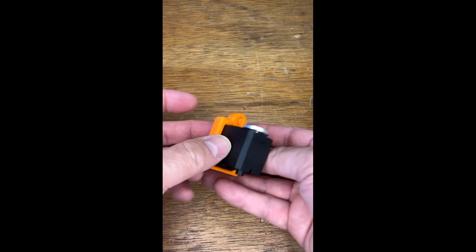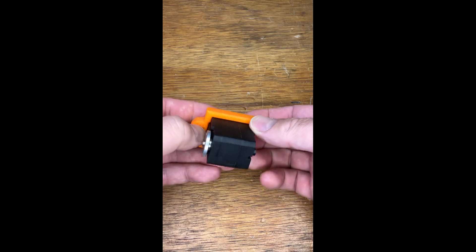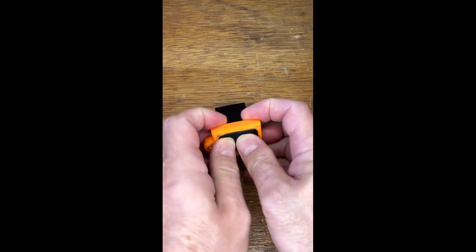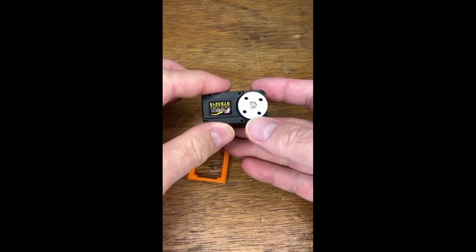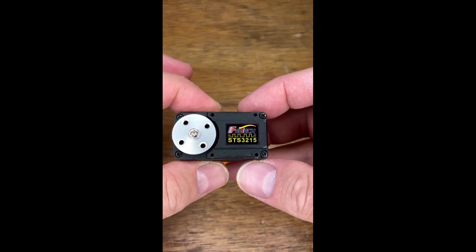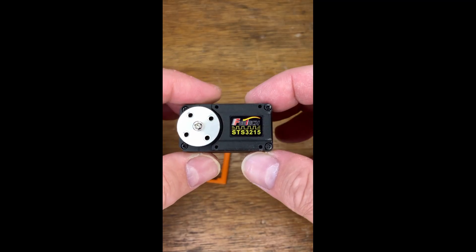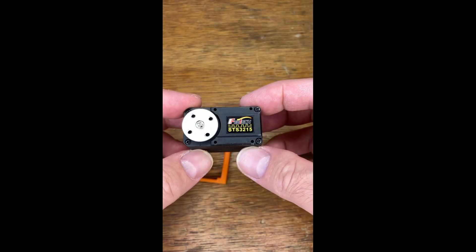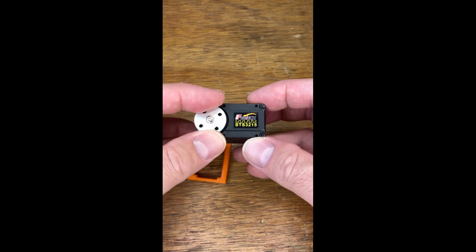I'm after a little help to check how people's printers are set up. This is the STS3215 by Fetech, and it is very good value for money. It's the motor, the servo which is being used in the Hugging Face